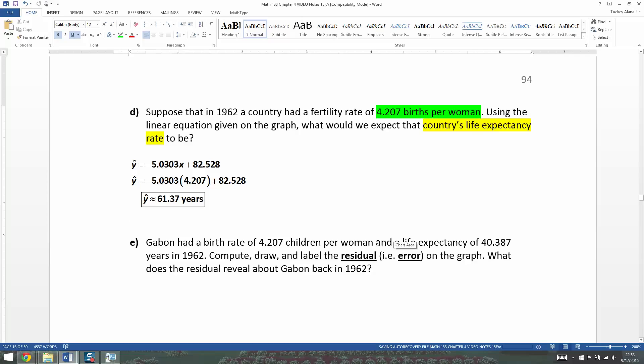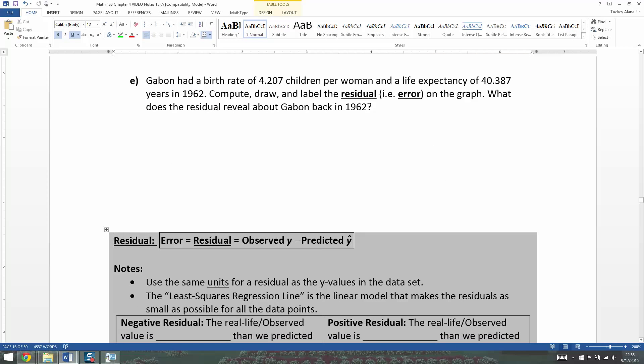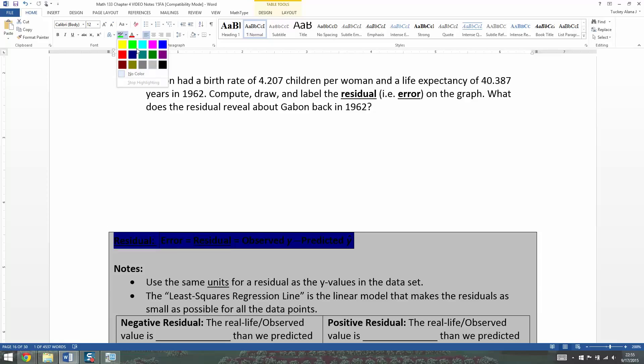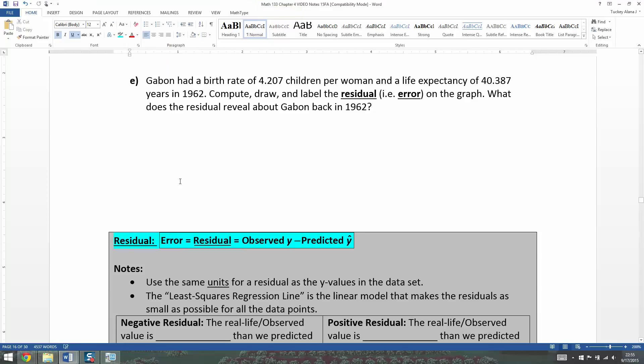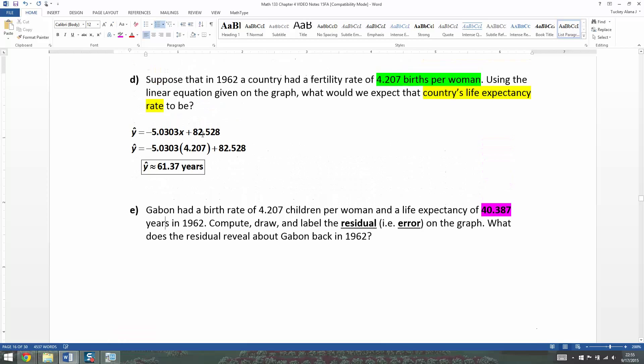Now I didn't make up the number 4.207 out of nowhere. That actually came from somewhere. It's the country of Gabon, which is in Africa. So it had a birth rate of 4.207 children per woman and a life expectancy of 40.387 back in 1962. So we're going to compute, draw, and label the residual on the graph. And what does that reveal about Gabon back in 1962? Well, the residual, there's a formula for it right here. The residual is your observed value, y, minus your predicted value, y hat. That's your residual. So what we want to do is we want to take what we observed in real life, and that would be right here, 40.387.